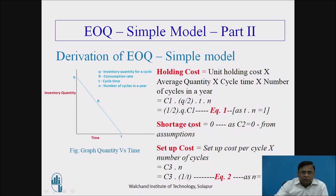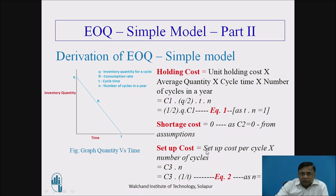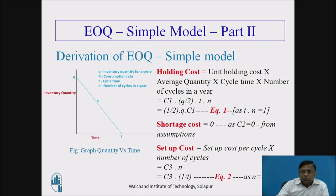Secondly, shortage cost is zero, as we have assumed no shortage is permitted. Third, setup cost: the basic setup cost C3 is in rupees per cycle. To get the total setup cost, we multiply unit setup cost C3 by number of cycles n, giving setup cost equal to C3 times n. Here n is the reciprocal of T, so setup cost equals C3 upon T. These two equations — holding cost and setup cost — will be needed for further derivation.